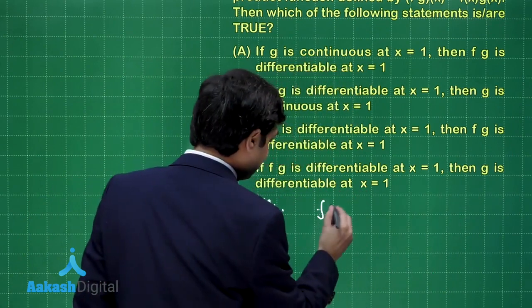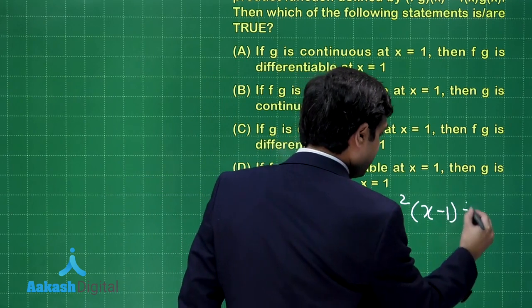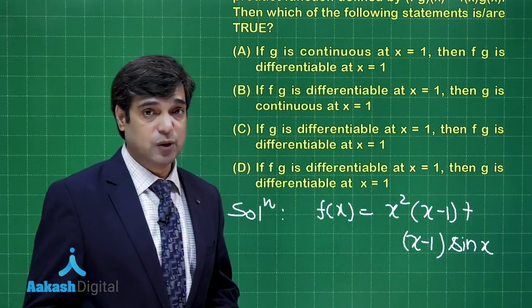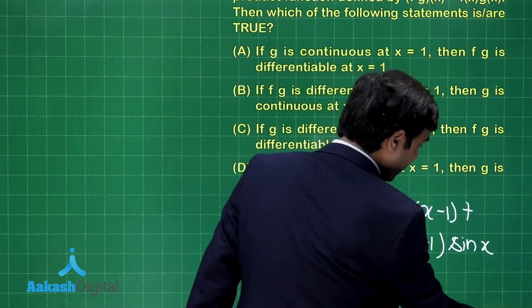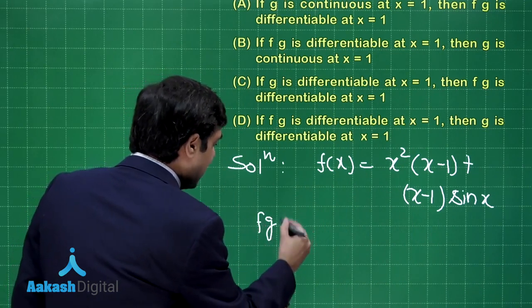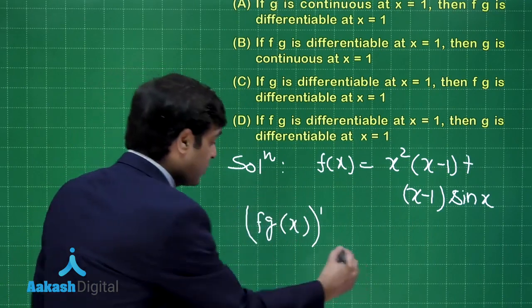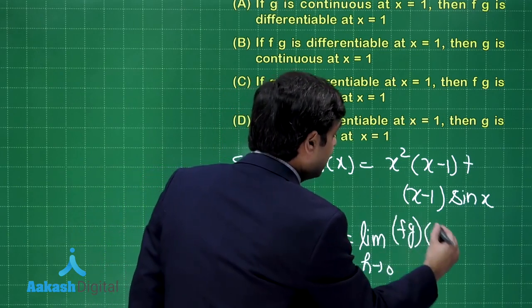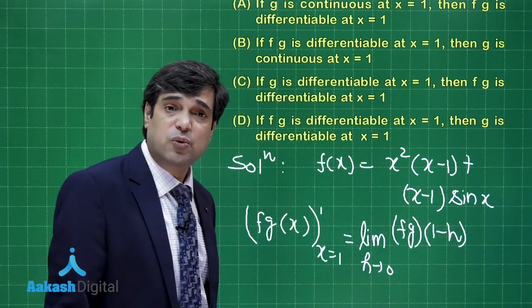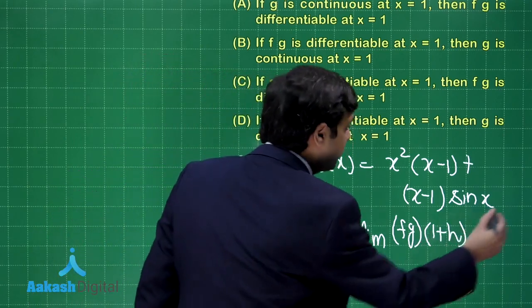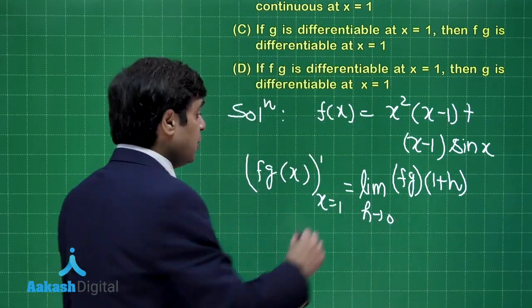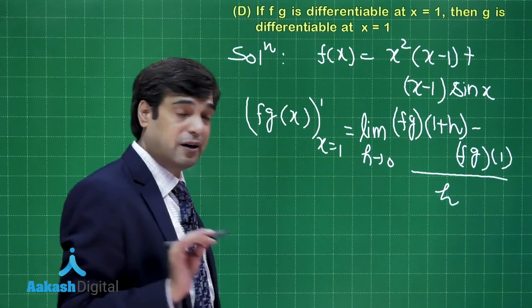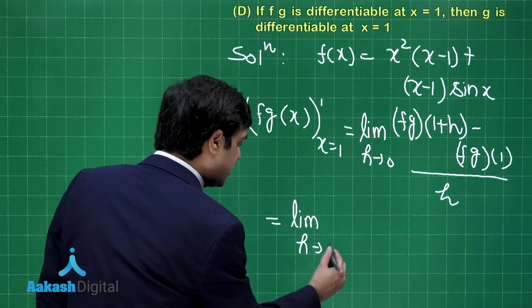We can rewrite f(x) as x²(x-1) + (x-1)·sin(x). We need to talk about differentiability of the product fg at x=1. For the derivative of fg at x=1, we use the first principle: the limit as h→0 of [fg(1+h) - fg(1)] / h, considering right-hand limit first.